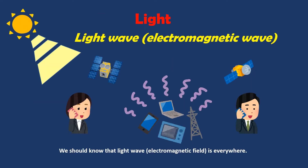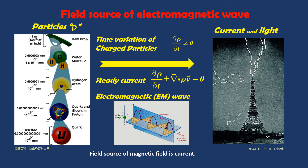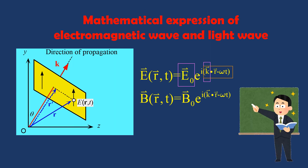We should know that light wave electromagnetic field is everywhere. The field source of electric field is charge, and the field source of magnetic field is current. Time variation of charge and current generates electromagnetic field waves. Understanding the interaction of electric field and matter is important.